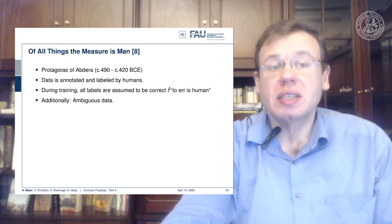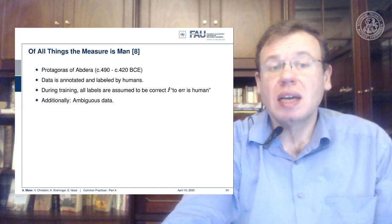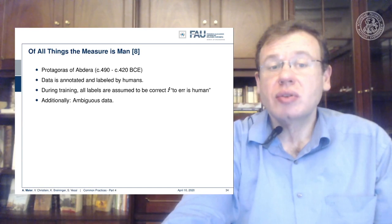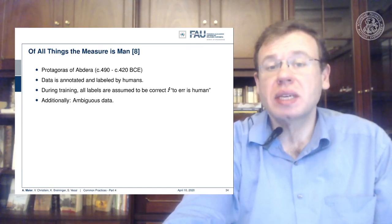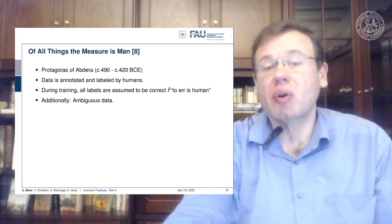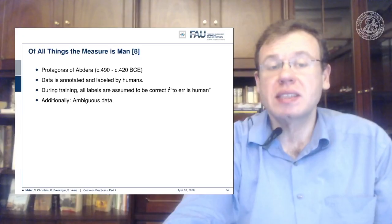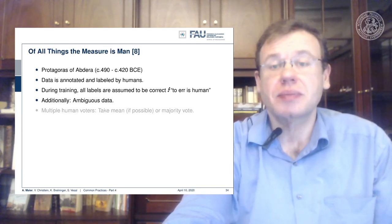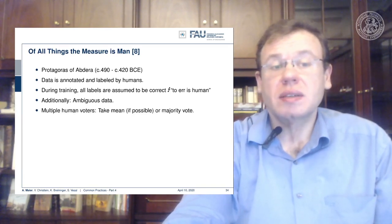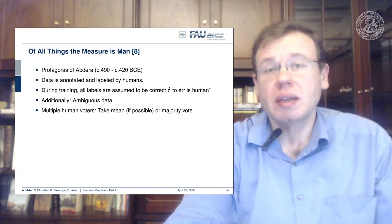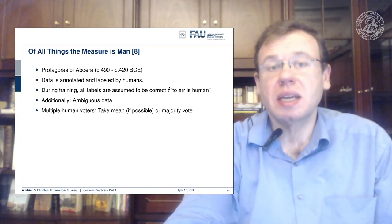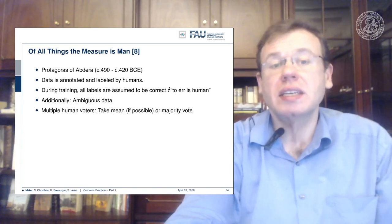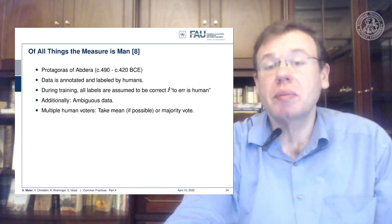Remember, the humans are a low bar to exceed. Data is annotated and labeled by humans, and during training all labels are assumed to be correct, but of course to err is human — all input is error. This means that in addition we may have ambiguous data. The ideal situation is that your data has been annotated by multiple human voters, and then you can take the mean or a majority vote.